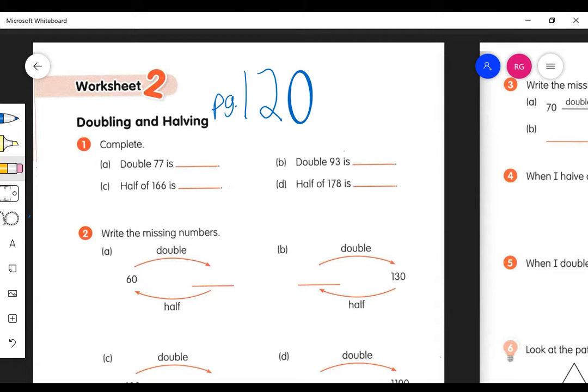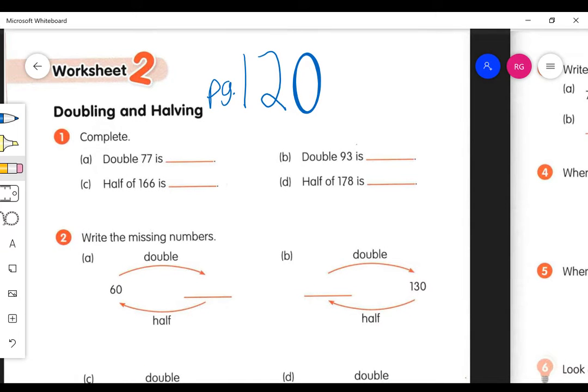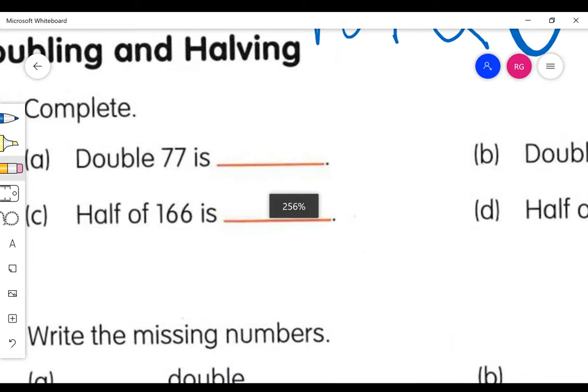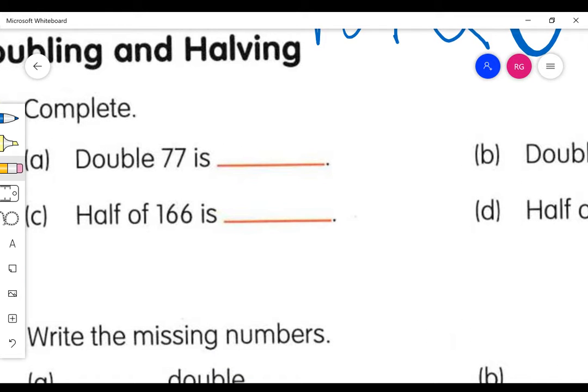We're here on page 120 now, and the first one says to double 77. So if I'm going to double something, that means to take that number times 2. So I'm going to take 77 times 2, and I get 154. So the word double means to times by 2, so the answer is 154.